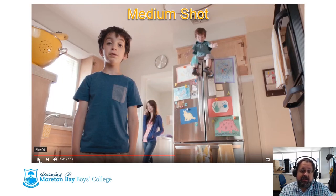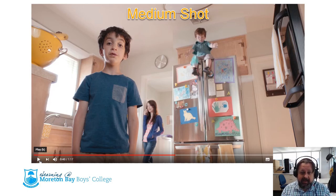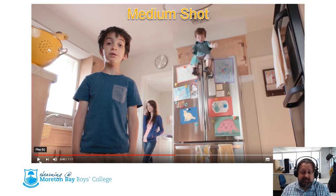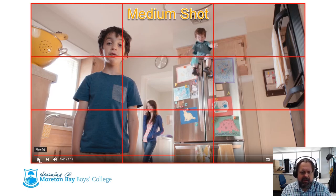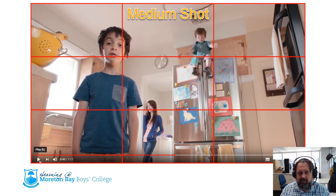Now we have the medium shot, which is from the waist up. The subject is the boy talking to camera on the left-hand side. If we look, the subject is again along that line of thirds — he's on the left-hand line of thirds.